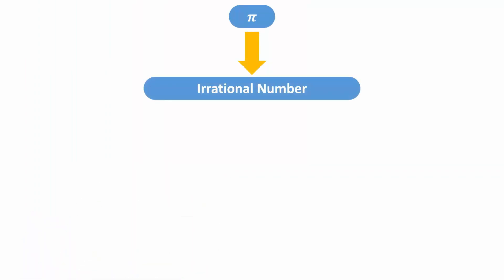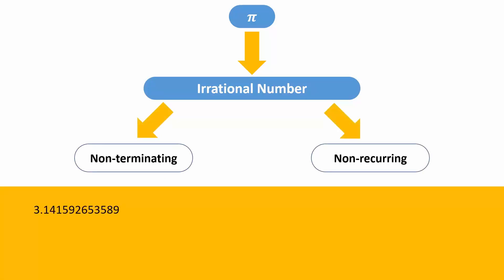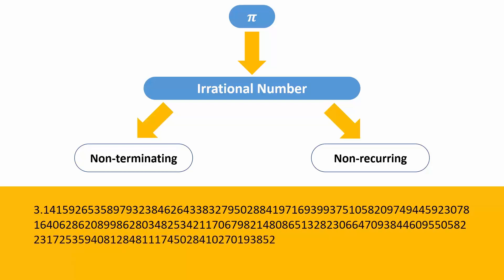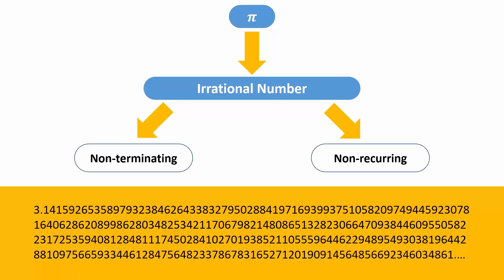This means that it is a non-terminating and non-recurring decimal number. The digits after the decimal keep going on and on. That is why it is non-terminating. And since there is no repeating pattern in the sequence of digits, it is also non-recurring.